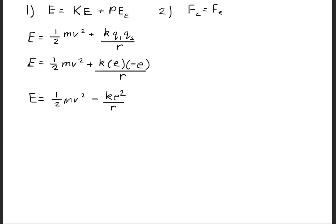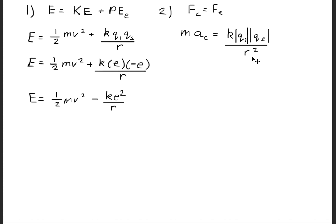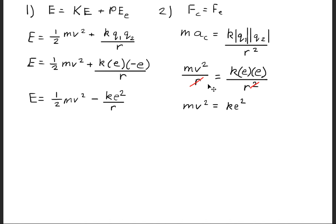Next, we relate the centripetal force with the Coulomb force. The centripetal force is mass times centripetal acceleration, and the Coulomb force is the Coulomb constant times the absolute values of both charges divided by R squared. We rewrite centripetal acceleration as v squared over R and substitute e for Q. Canceling one R, we get mv squared equals ke squared over R.